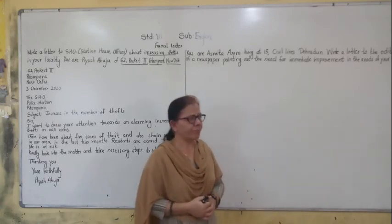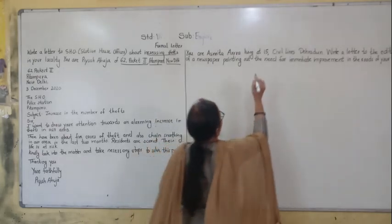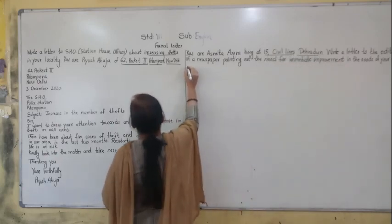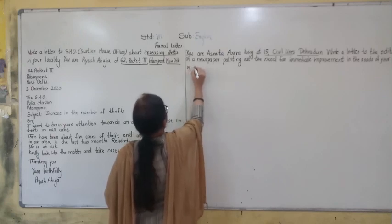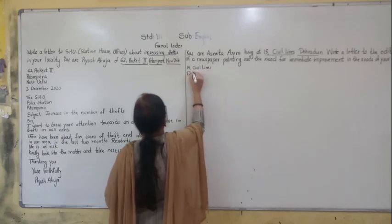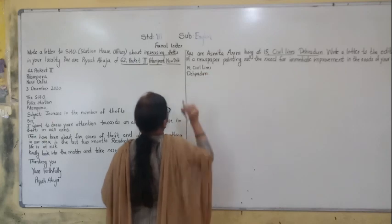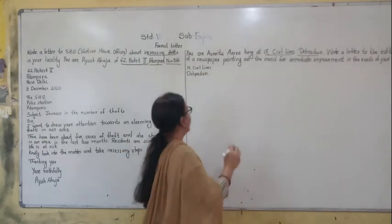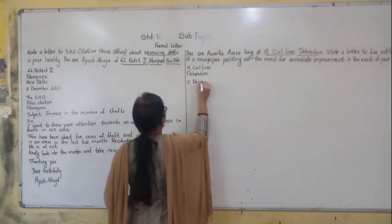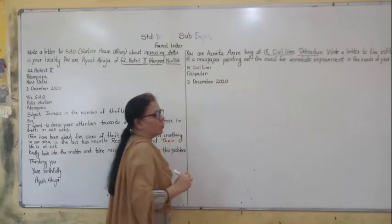First, write the sender's address: 15 Civil Lines, then Radu. After that, write the date: 3 December 2020.